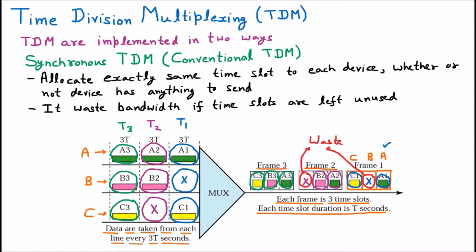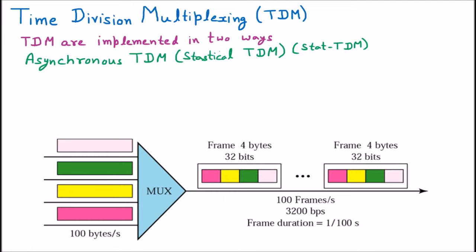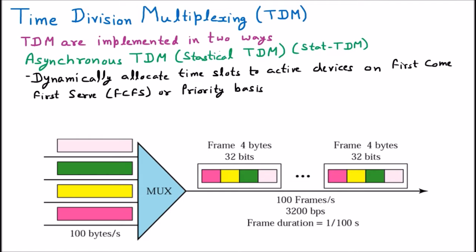We are having the next type of TDM implementation which is asynchronous TDM or statistical TDM, also called stat TDM. In synchronous TDM, everybody got the same time slot even if there is no data. This is wastage. To avoid that wastage, we have asynchronous TDM. It dynamically allocates time slots to active devices on a first come first serve basis or priority basis. Here everybody is not having the same time slot — it dynamically allocates. Active devices means those which are currently ready for sending.